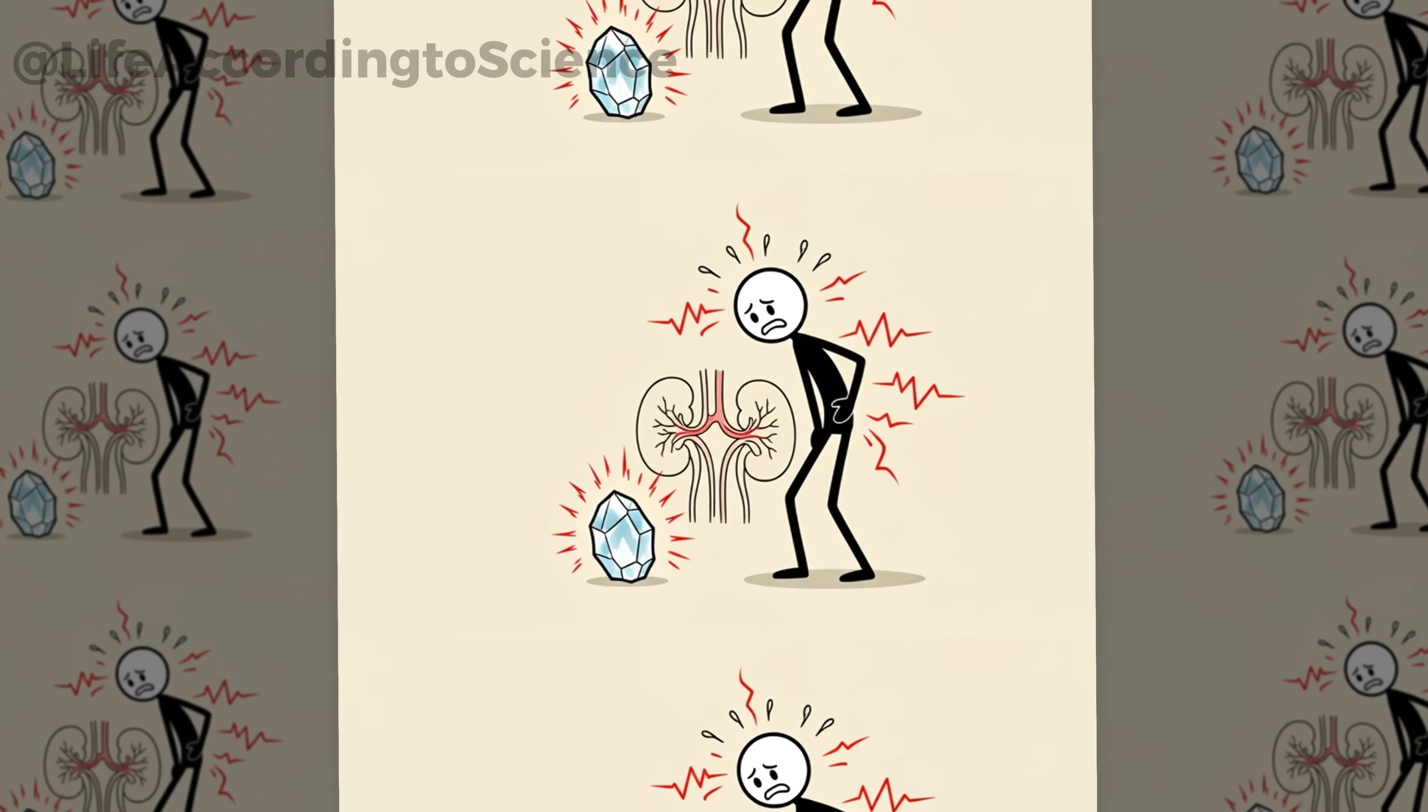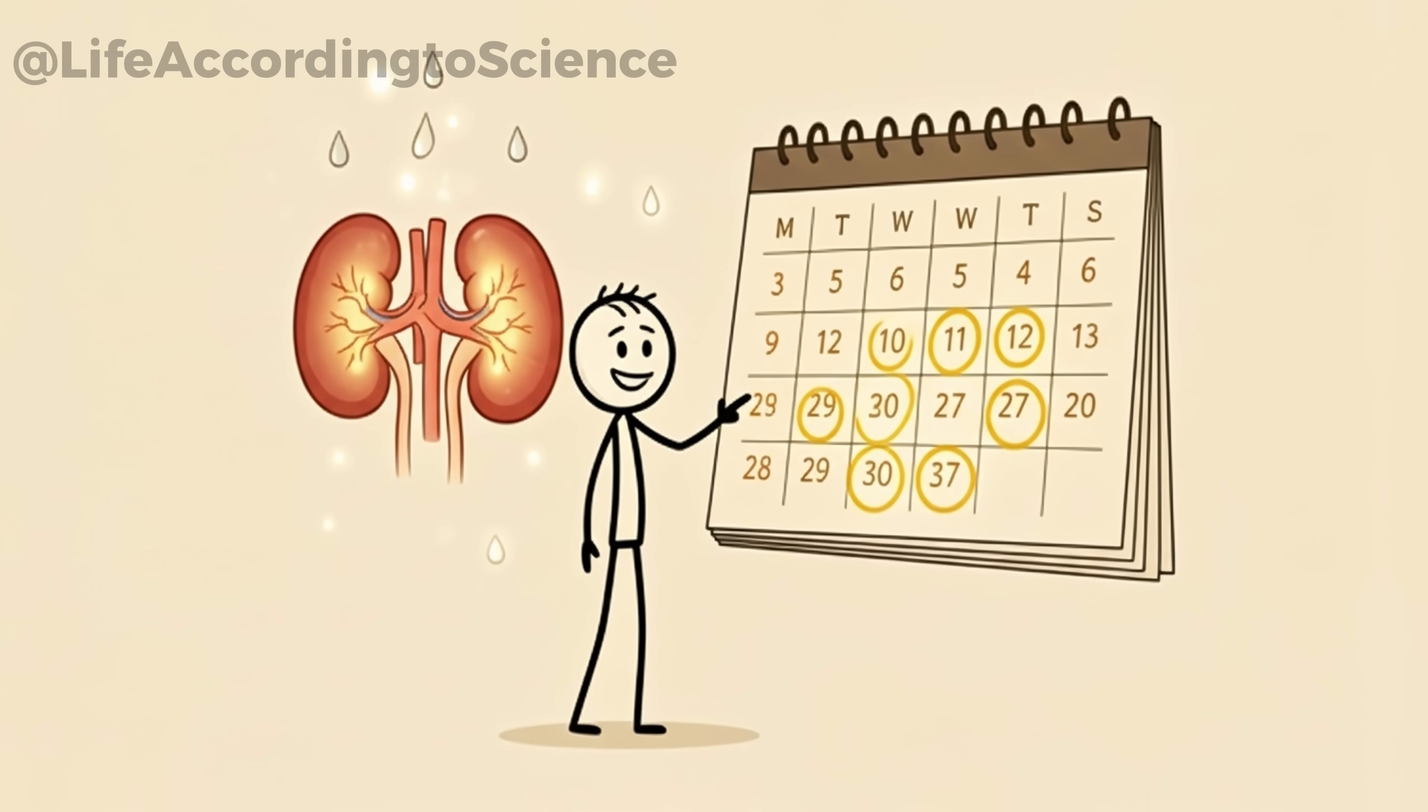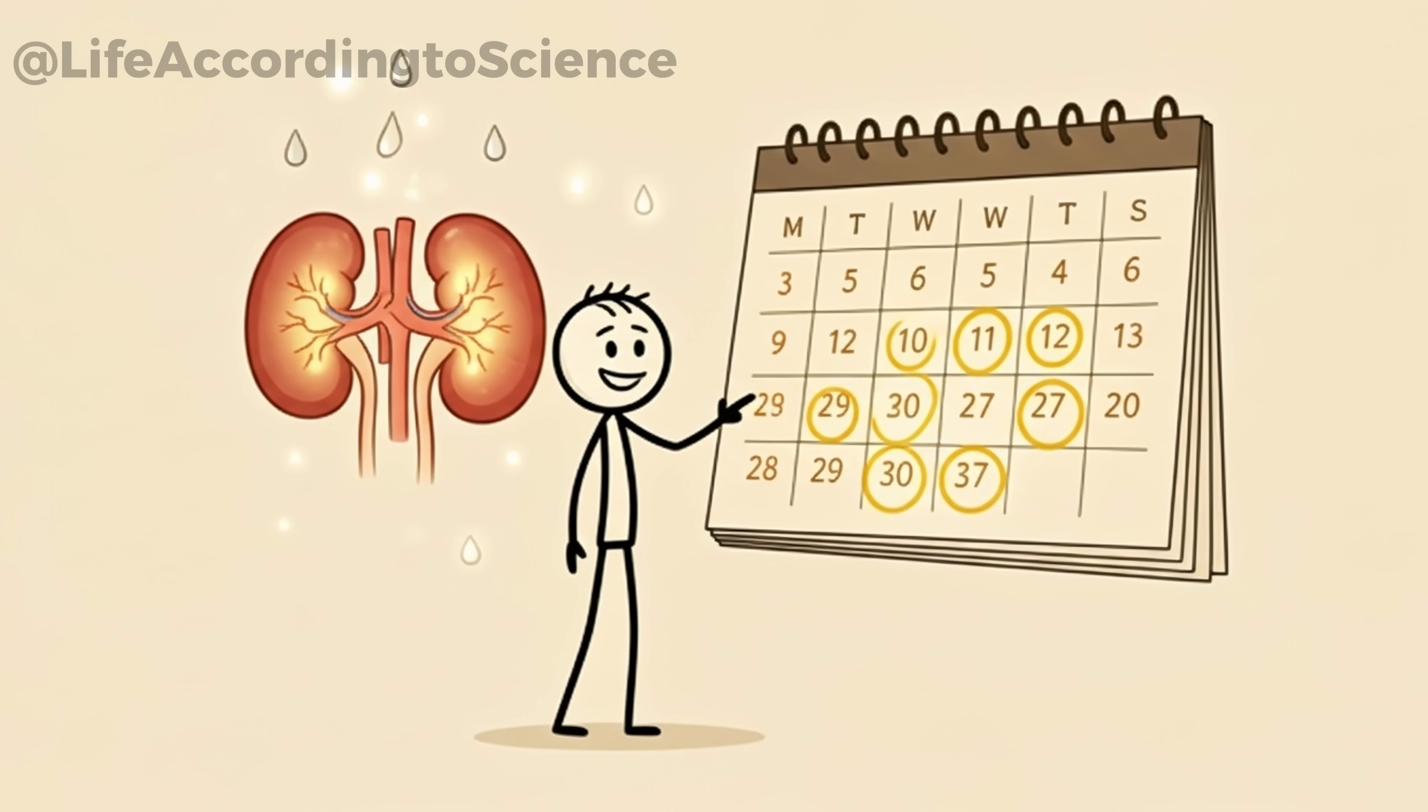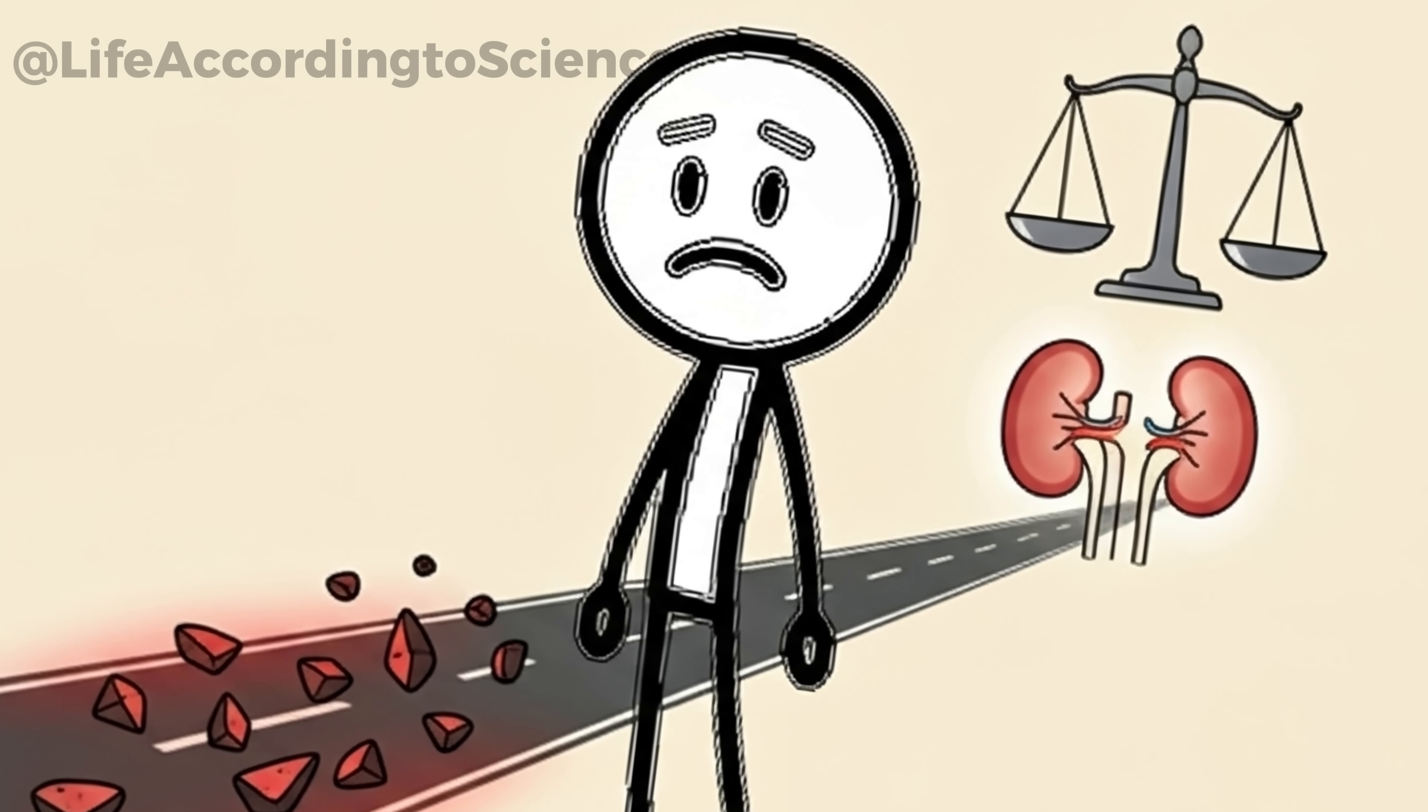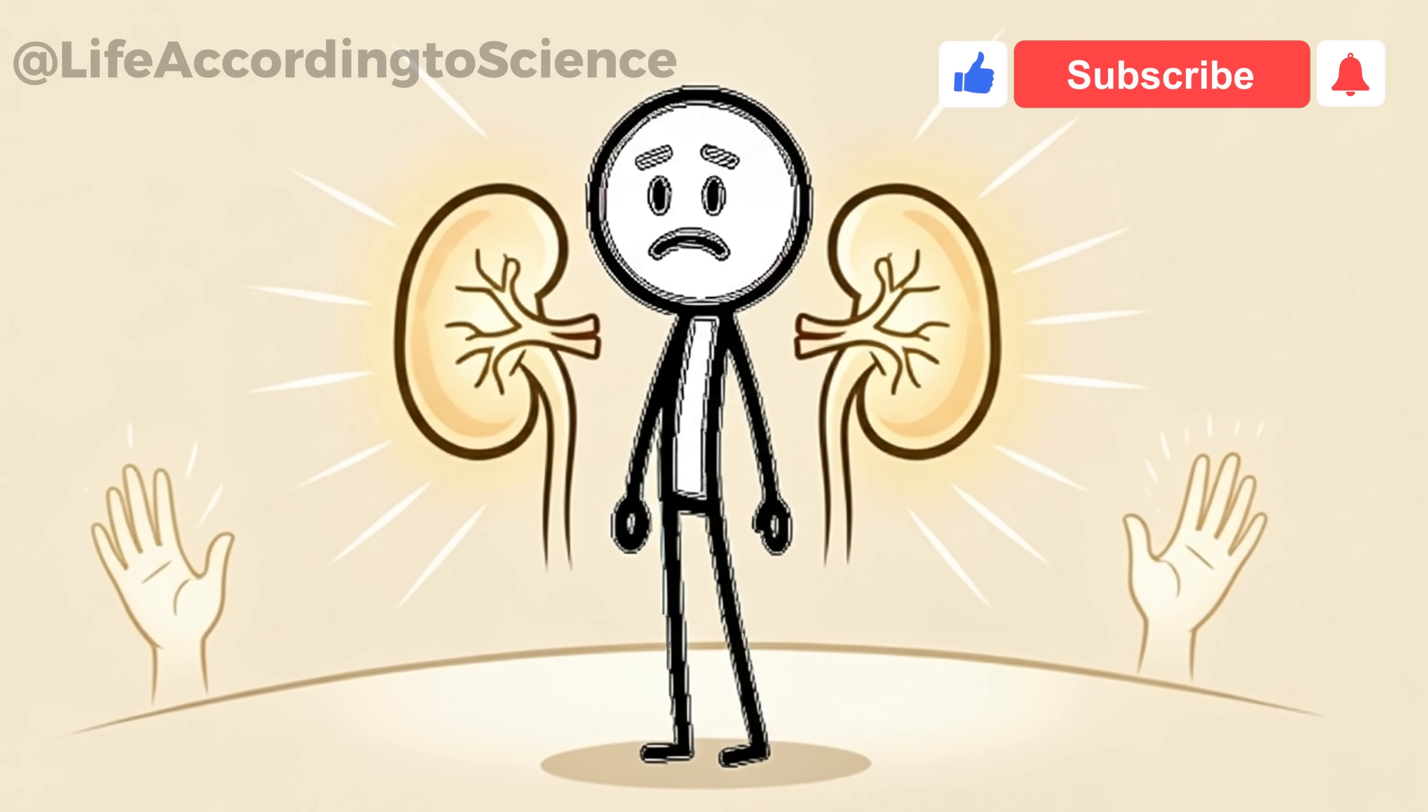The scary part? Once you've had one kidney stone, the chances of getting another increase dramatically. But here's the hope. Within just a month of quitting sugar, urinary composition begins to improve, lowering the risk of stone formation. Imagine 30 days of discipline sparing you years of excruciating pain. That's the kind of trade your kidneys will thank you for.